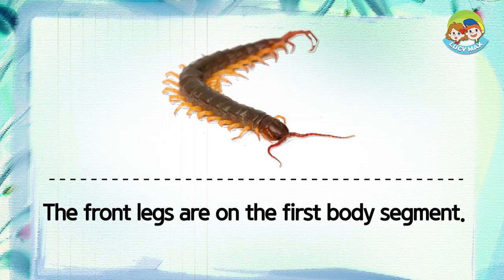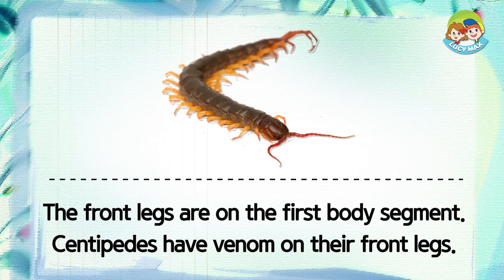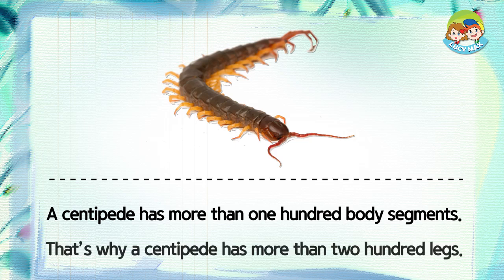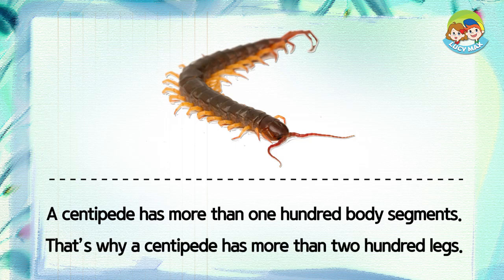It has a pair of legs on each body segment. The front legs are on the first body segment. Centipedes have venom on their front legs. A centipede has more than one hundred body segments, and that's why a centipede has more than two hundred legs.